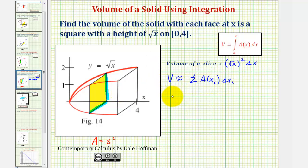And therefore the actual volume is equal to this definite integral. So we'd have the integral of A(x), which would be the square root of x squared, or just x, integrated with respect to x from zero to four.